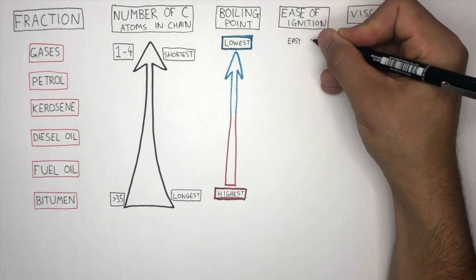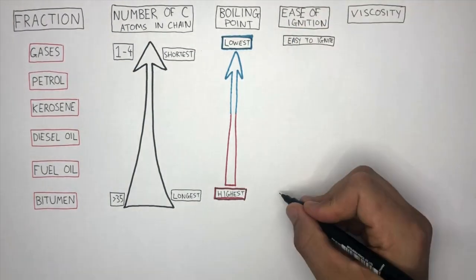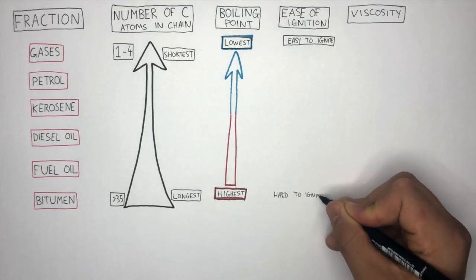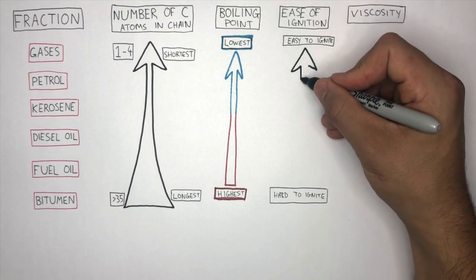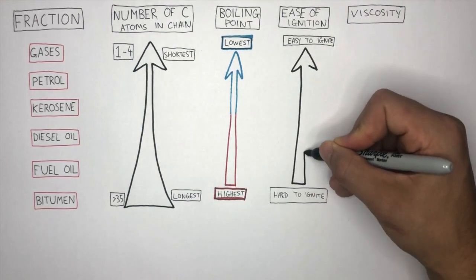Gases are the easiest to ignite, whereas bitumen is the hardest to ignite. This is because as the length of the hydrocarbon chain increases, they become harder to ignite.